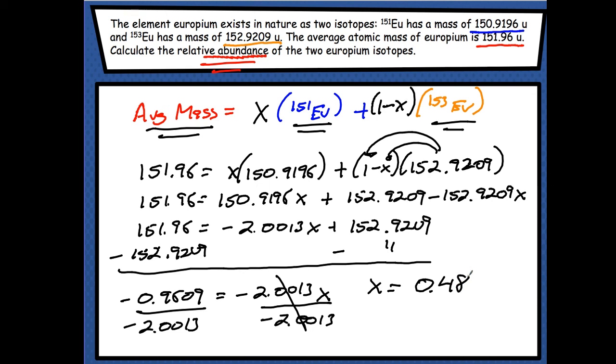Now, I'm not done with my answer. I did find the answer for EU-151 over here. So, this is going to be 0.48 for EU-151. But they want the relative abundance for both isotopes. So, this is answering one of them, EU-151.